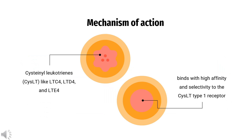How does Zafirlukast work? Zafirlukast is a selective and competitive receptor antagonist of leukotriene D4 and E4 (LTD4 and LTE4), components of slow-reacting substance of anaphylaxis (SRSA). Cysteinyl leukotriene production and receptor occupation have been correlated with the pathophysiology of asthma, including airway edema, smooth muscle constriction, and altered cellular activity associated with the inflammatory process, which contribute to the signs and symptoms of asthma.